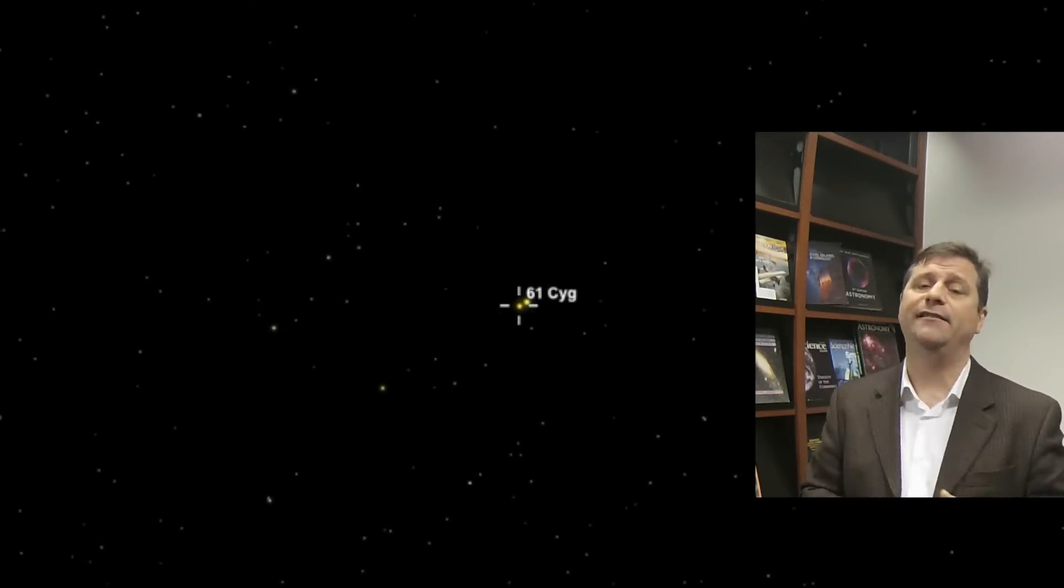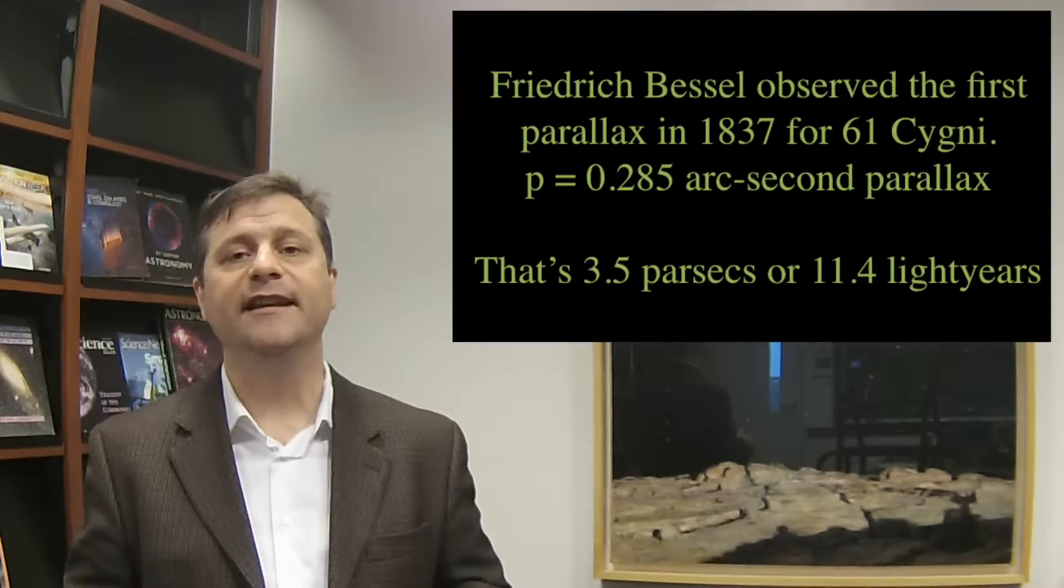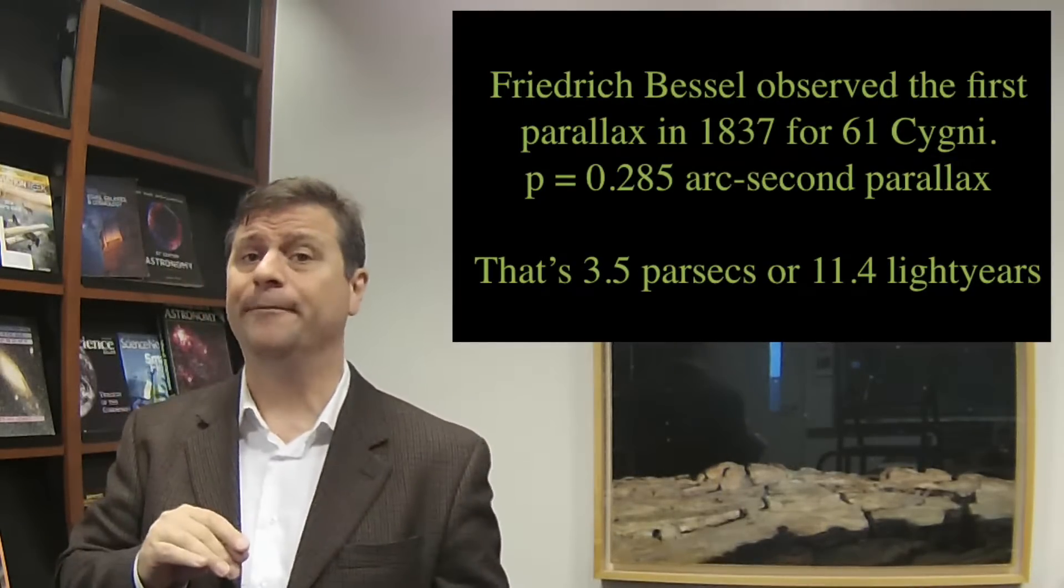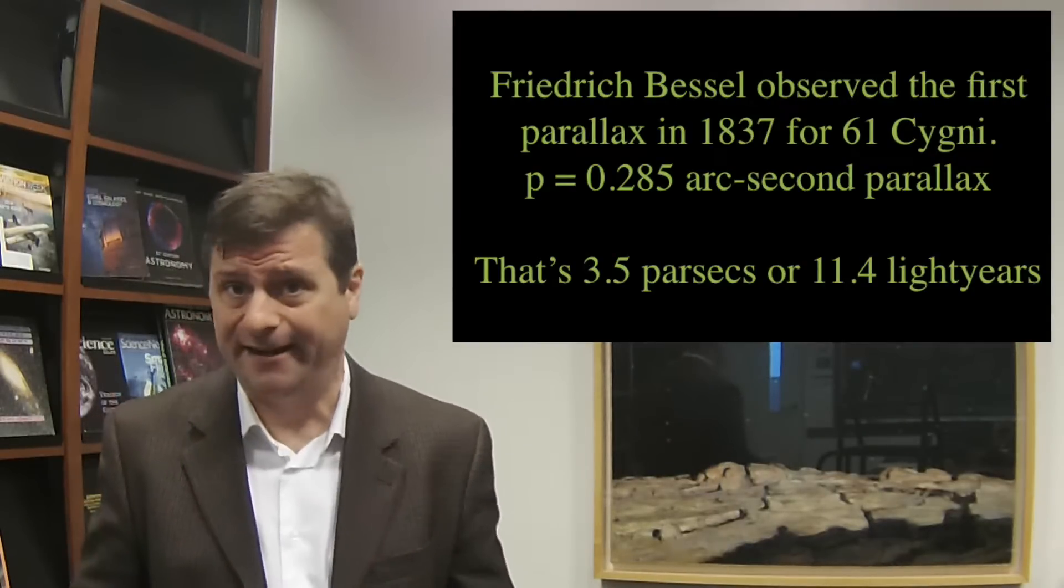In 1838 Friedrich Wilhelm Bessel measured its parallax to be 0.285 arc seconds, which works out to be about three and a half parsecs or about 11.4 light years. So the very first parallax that was discovered was less than an arc second. It was a quarter of an arc second. It's an incredibly difficult measurement, and it took until 1838 for someone to develop it. So we really can't fault Aristotle or Tycho Brahe or anybody else who used the argument that parallax did not occur to shoot down the idea that the sun was at the center, because parallax was an extremely difficult thing to measure.